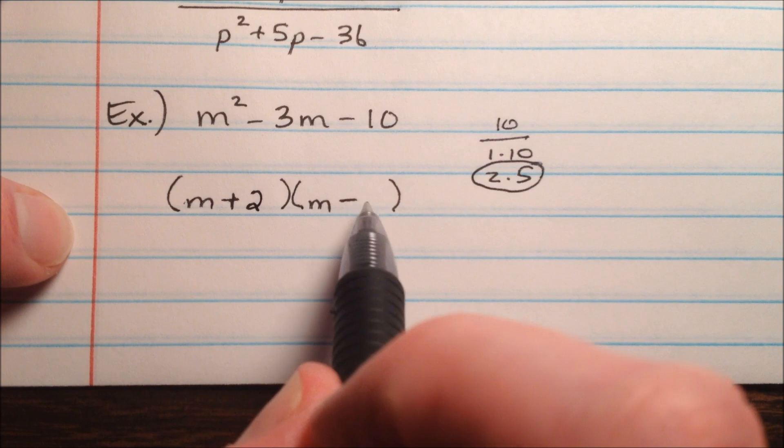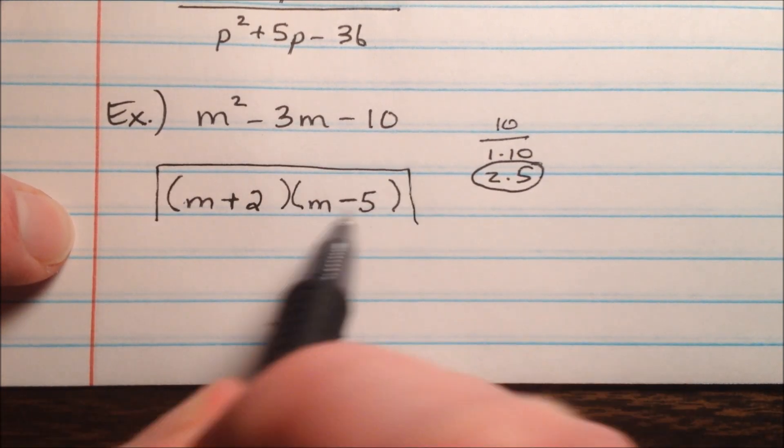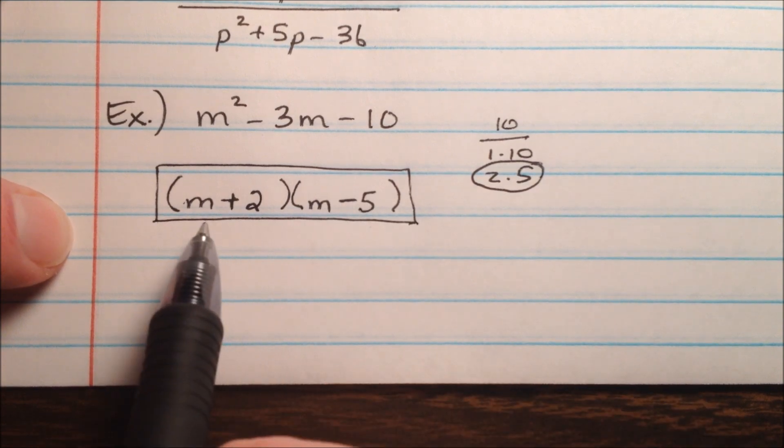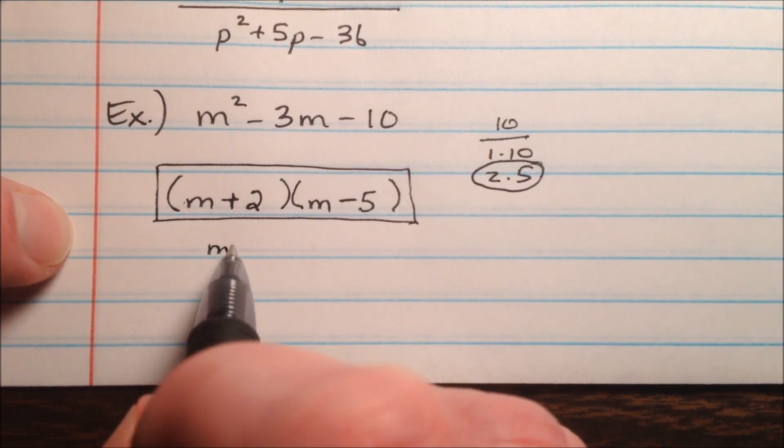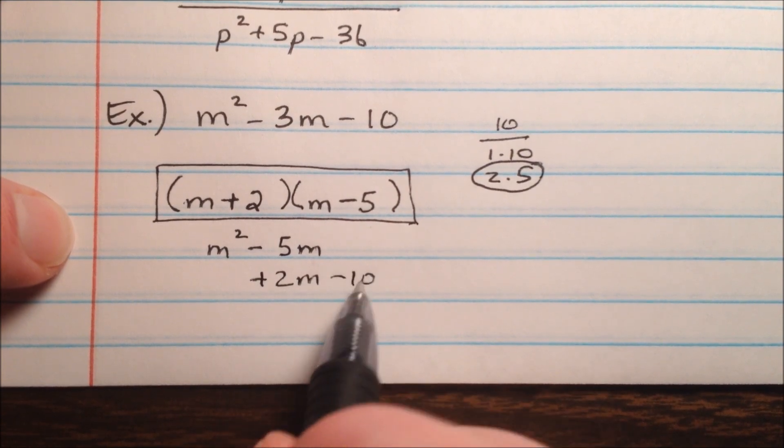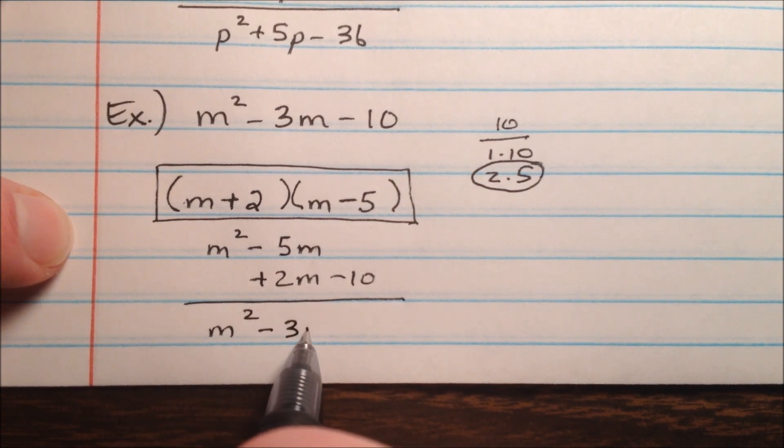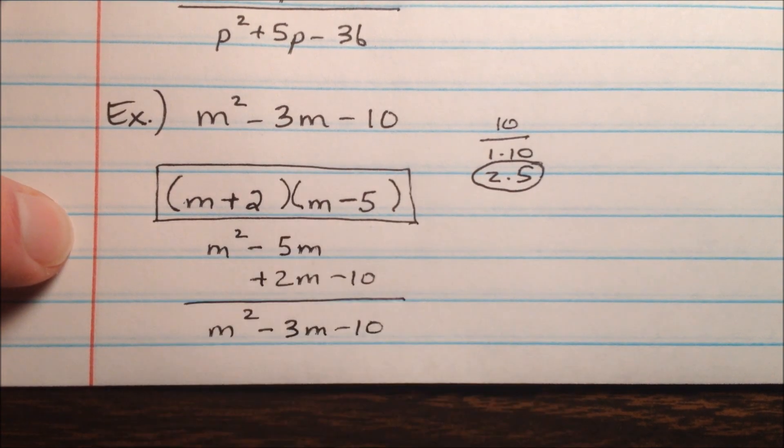Looks like it'll be plus 2 and minus 5. Because when I add them, it'll be negative 3. And when I multiply, it'll make negative 10. And once again, let's just go ahead and foil it out. m squared minus 5m plus 2m minus 10. And we'll see for our final example that we do indeed get what we started with.